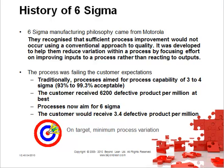The process was failing customer expectations. Traditionally, the process aimed for process capability of 3 to 4 Sigma — that's 93 to 99.3% acceptable — and the customer received, on average, 6,200 defective products per million at best. The process is now aimed for Six Sigma, meaning a customer would receive 3.4 defective products per million. We're looking to get it on target with minimum process variation.